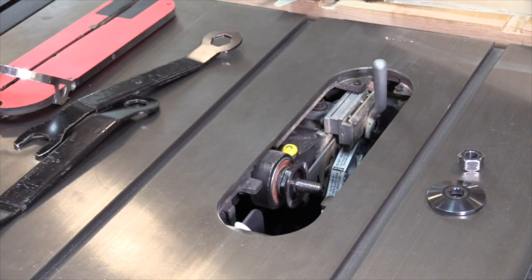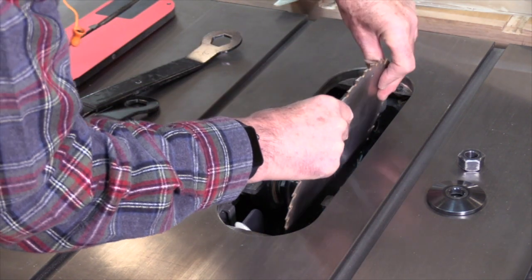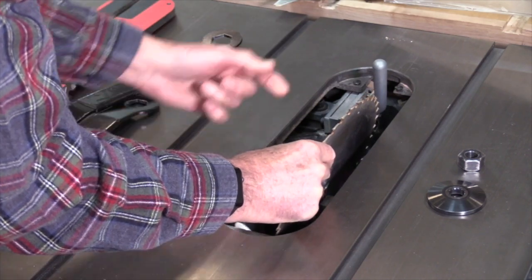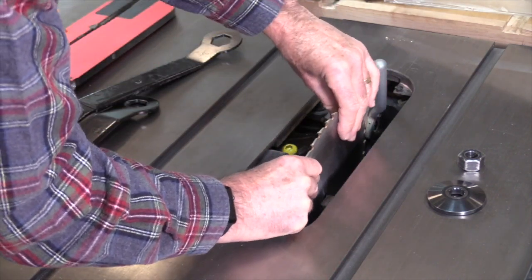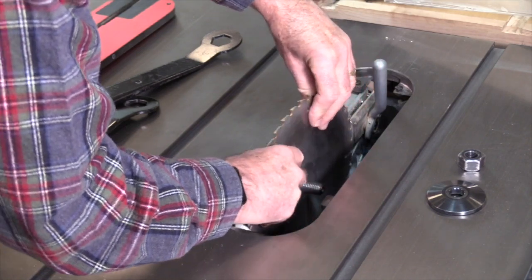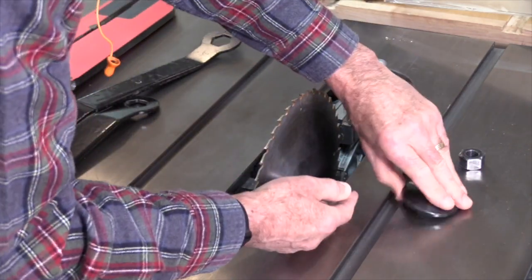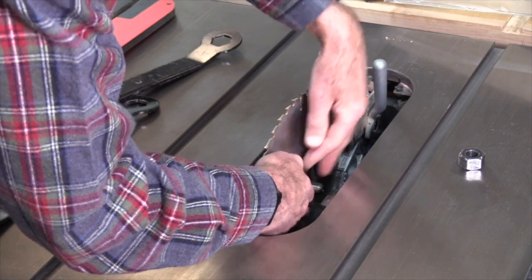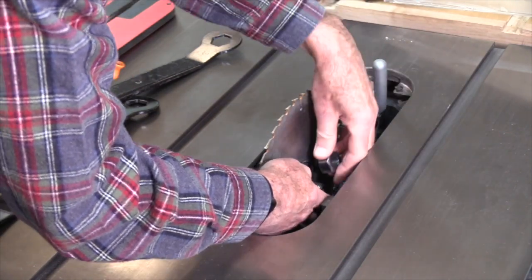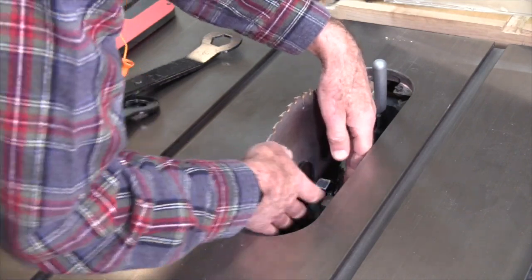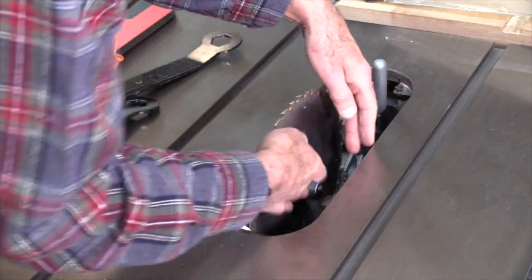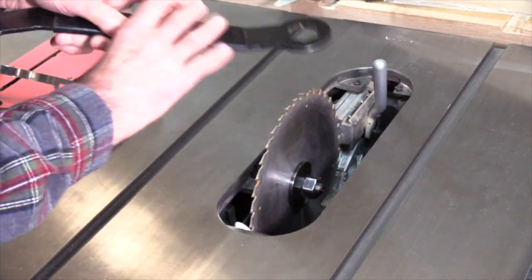Then choose your blade and reverse all those steps. Blade goes back on, paying attention to which direction the teeth go. The teeth want to come toward you at the top of the blade's rotation. Washer on first, then the nut, taking care not to drop it into the innards of the saw, and then tighten it back up.